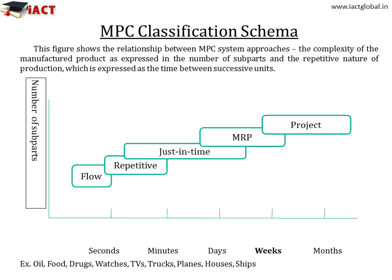This figure shows the relationship between MPC system approaches. It shows the complexity of the manufactured product expressed in the number of subparts, and the repetitive nature of production expressed as time between successive units. The lower left-hand corner shows a flow-oriented manufacturing process typical of many chemical, food, petroleum and bulk product firms. Because products are produced in a stream instead of discrete batches, virtually no time elapses between successive units.